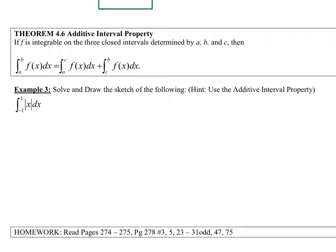If f is integrable on three closed intervals determined by a, b, and c, and those intervals would be a to b, a to c, and also b to c, then the integral from a to b of f of x dx equals the integral from a to c of f of x dx plus the integral from c to b of f of x dx.